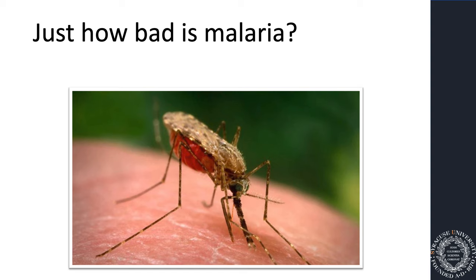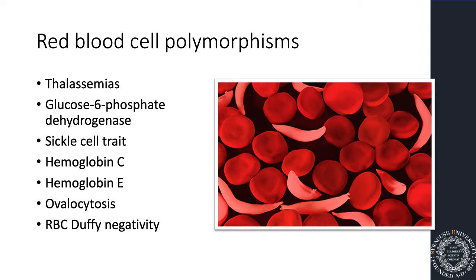Malaria infects red blood cells, and there are what's called red blood cell polymorphisms — genetic traits that have been adapted and change the structure of a red blood cell to make people less likely to get severe disease from malaria. Malaria is actually driving this evolution in humans where red blood cells are changing, though some of these changes are quite dangerous.